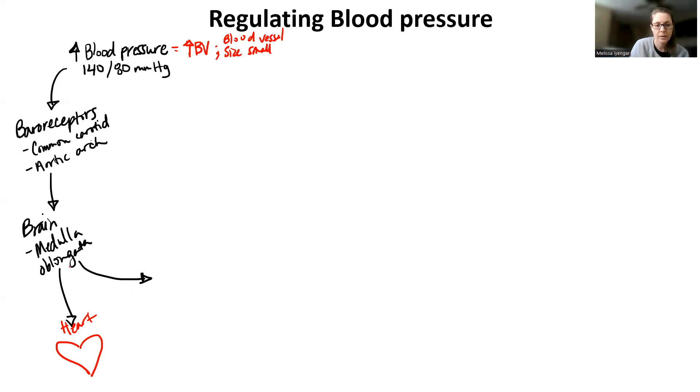So one of our effectors has to be the heart because the heart is where our blood volume is being ejected out of. So the medulla oblongata targets the heart and it's going to tell us to decrease heart rate. And as we decrease heart rate, essentially what that means is we decrease blood volume. The amount of blood ejecting out of the left ventricle goes down.